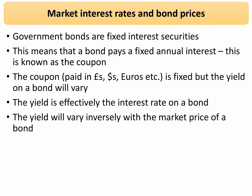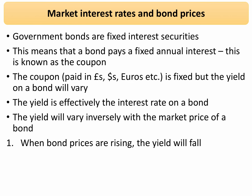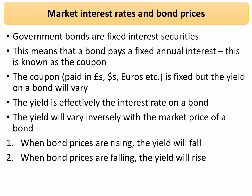Here's the key point. The yield on a fixed interest bond will vary inversely with the market price of the bond. In other words, when bond prices are going up, the yield will fall. When bond prices are on the way down, the yield will increase.